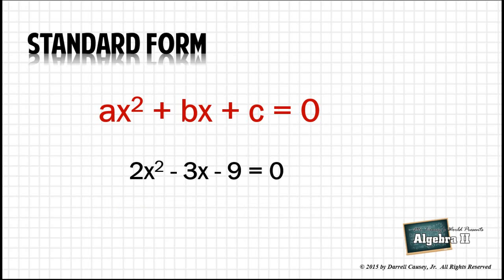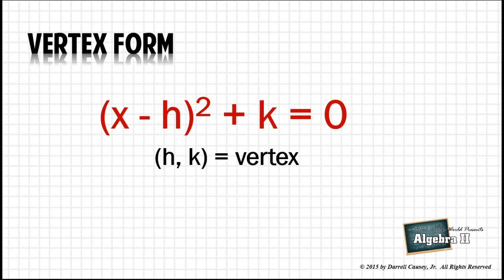Then we need to look at the vertex form. And that's just simplifying a quadratic equation into the form that you see there, where H and K are the vertex of the parabola from the quadratic.